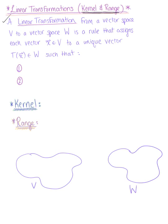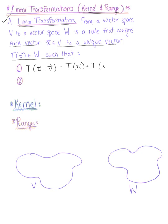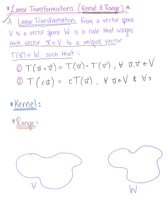We start by recalling the definition from 4.1: a linear transformation from a vector space V to a vector space W is a rule that assigns each vector x in V to a unique vector T(x) in W, such that T(U + V) = T(U) + T(V) for all vectors U and V in V, and T(cU) = c·T(U) for all vectors U in V and all scalars c.